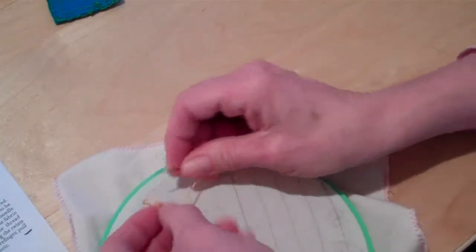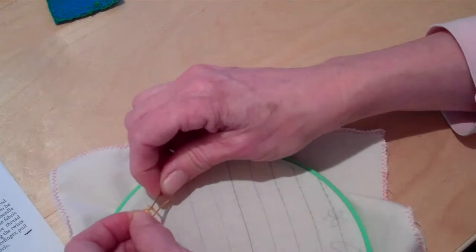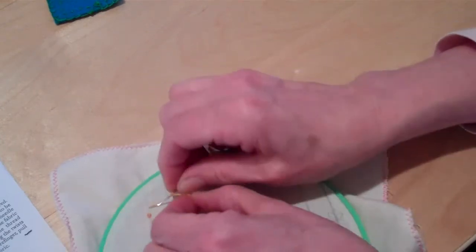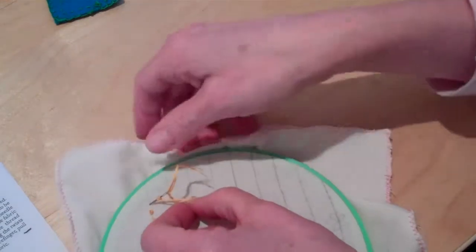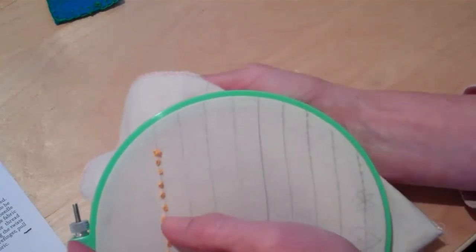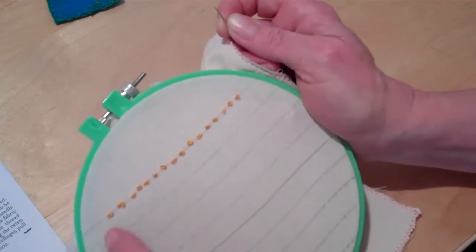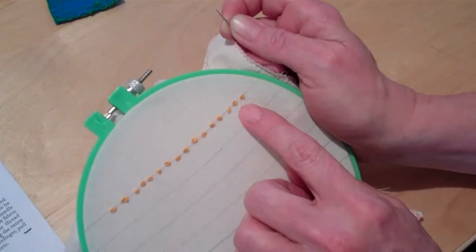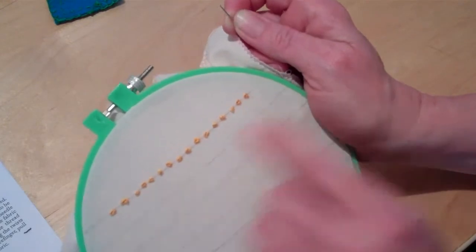I probably should have stopped one before, but so away from me. One, two, back in close to where I came out. Now I'm on the back side and I'm going to end it. You're going to make 16 French knots across here because when you're 16 you're allowed to drive. So 16 French knots will let you move on to your next embroidery stitch.